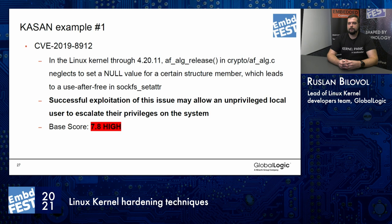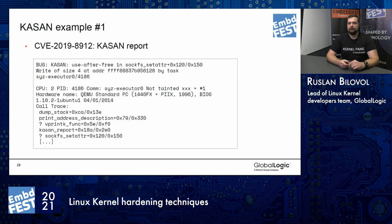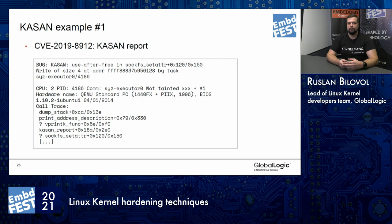Let's see some real examples of how KASAN discovers bugs in the kernel. The first issue was discovered in the Linux kernel — it was a crypto issue. Somebody forgot to set one pointer to null, and the kernel was still checking for that pointer. The usual check is: if it's not null, go and access that pointer — and that was a use-after-free. That was actually a CVE issue, a vulnerability with quite a high score. Here is how the KASAN report looked: use-after-free in a certain place, and the dump stack. From such reports you get an idea of how to debug and where to look. The fix was quite simple — just assign a null pointer to your variable so it stops checking for that variable and doesn't go in the wrong direction.